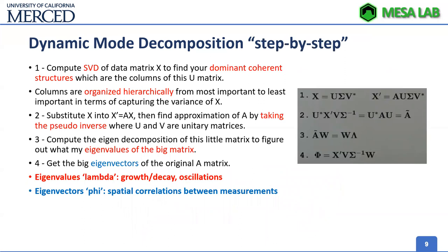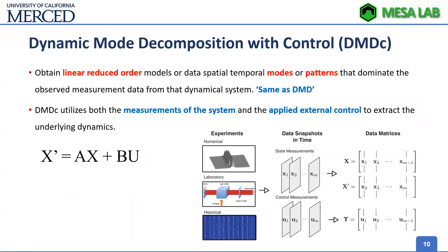Step by step, we compute the SVD of matrix X to find dominant structures, organize them hierarchically, substitute X into X prime, then find the approximation of A by taking the pseudo-inverse of U and B matrices, and compute the eigenvalues and eigenvectors. Once a control signal is included, it's not only X prime equals A times X — we also need to include B times U, where the input signal U is introduced to the system.